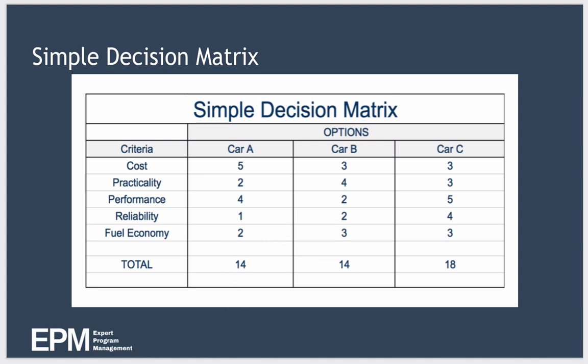One of the drawbacks of this simple decision matrix is that not every criteria will have the same importance to us. For example, we might consider reliability to be more important than performance, or we might consider price to be more important than all the other factors put together. To overcome this and take this into account, we can use a weighted decision matrix.